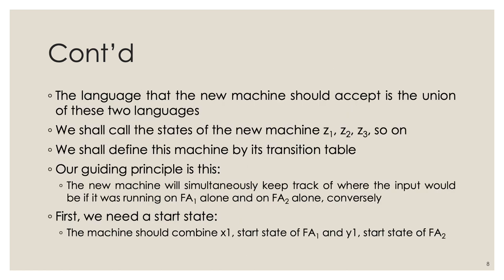The language the new machine should accept is the union of these two languages. We call the states of the new machine Z1, Z2, etc., and define the machine by its transition table. The guiding principle is that the new machine simultaneously keeps track of where the input would be if it were running on FA1 and on FA2 in parallel.